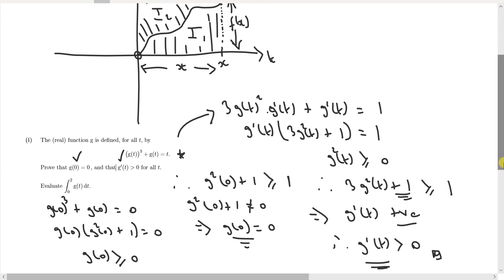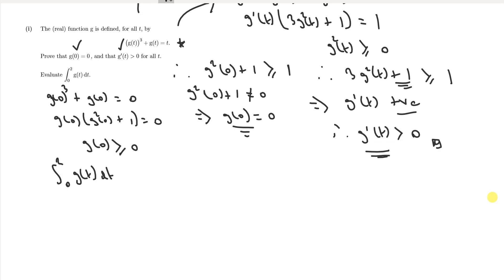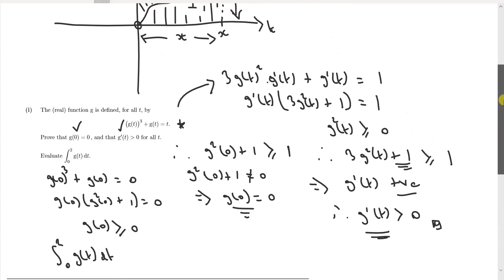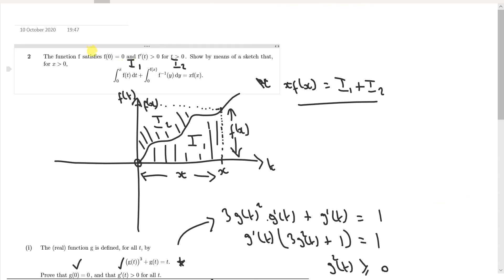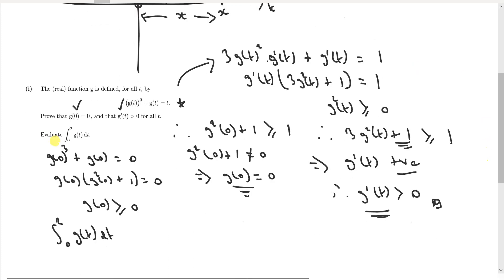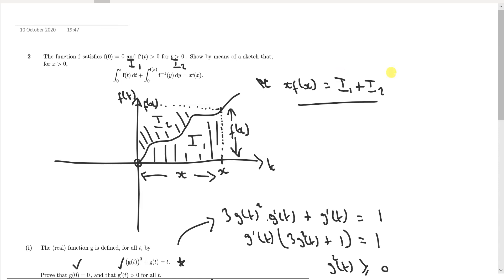Now it's asking us to evaluate the following integral. Some of you might be thinking — what has this got to do with what we've just found out? Well, these findings allow us to use the formula from earlier, because it requires f(0) equals 0 and f'(t) greater than 0 — we've just proven all those conditions for g. So that allows us to use this formula. Let's use it and see how we get on.